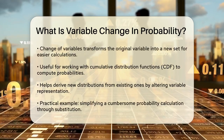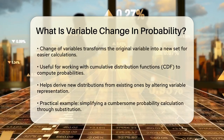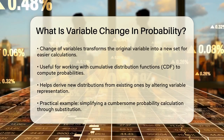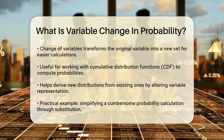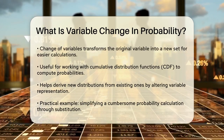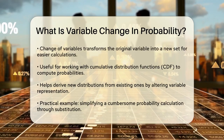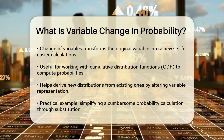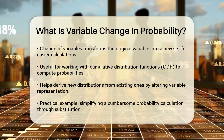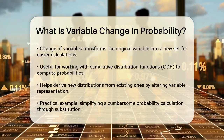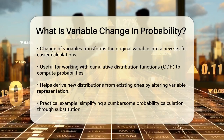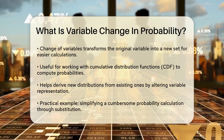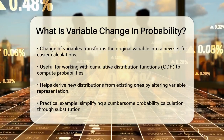For example, if you're dealing with a cumulative distribution function (CDF), changing the variables can help you compute probabilities more efficiently. This is especially useful when you need to derive new distributions from existing ones. By altering the variable's representation, you can simplify the problem significantly.